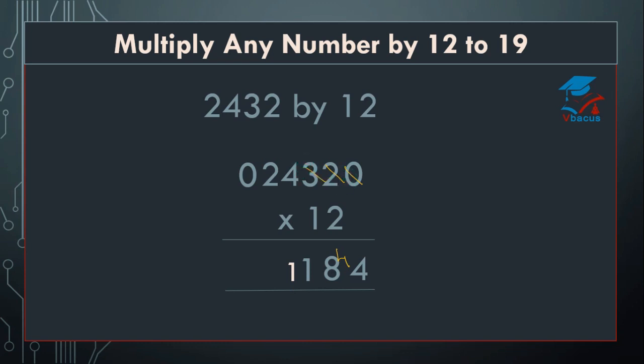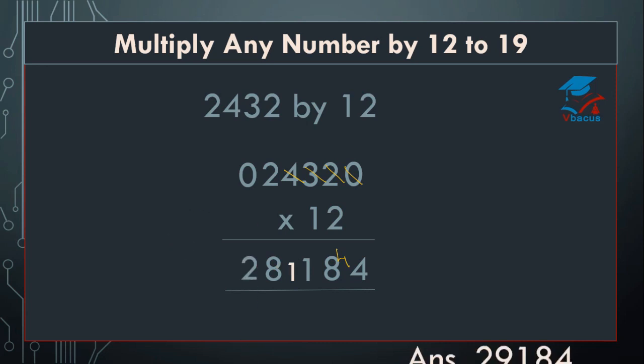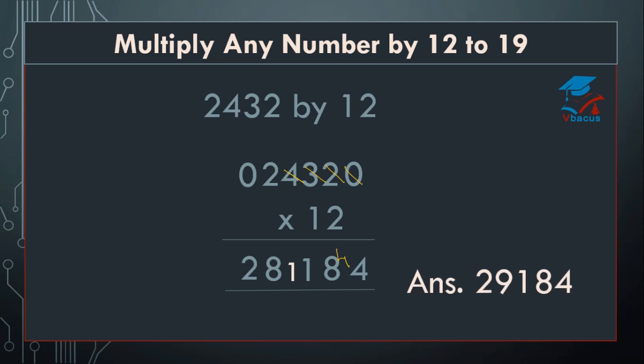Cut 3. 2 twos are 4 plus 8 — write 8. Cut 4. 2 twos are 4. 2 zeros are 0 plus 2 equals 2. And this 1 will be added to 9. So your final answer will become 2, 9, 1, 8, 4.